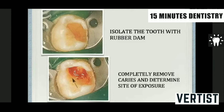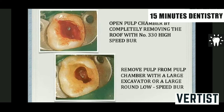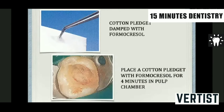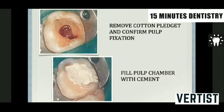After proper anesthesia of the tooth, it is isolated with rubber dam. Completely remove the caries and determine the site of exposure, followed by opening of the pulp chamber completely by removing the roof using a number 330 high-speed bur. Remove the pulp from the chamber with a large spoon excavator or a large round bur at slow speed. Then a cotton pellet dampened with formocresol — with excess squeezed out — is placed in the pulp chamber for four minutes. After removal, check that the pulp has been fixed, indicated by dark brown color at the orifices.